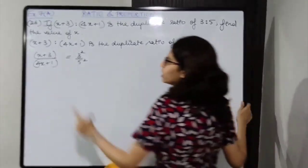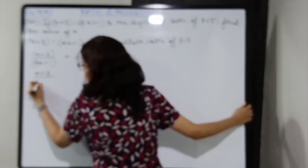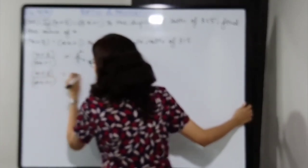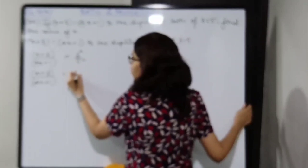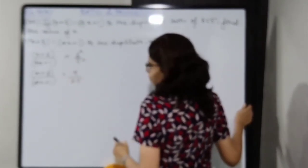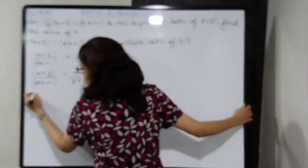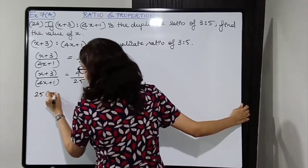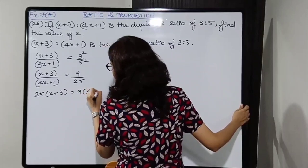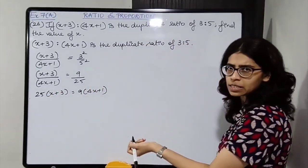So now solve: x plus 3 upon 4x plus 1, keep the brackets. 3 squared is 9, 5 squared is 25. Cross multiply — so 25 into x plus 3 is equal to 9 into 4x plus 1. We have to find the value of x.